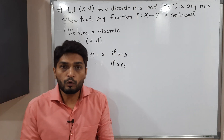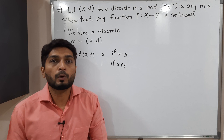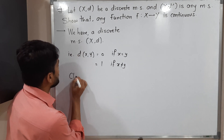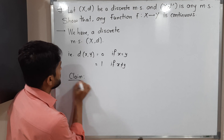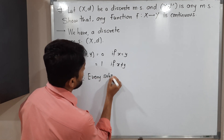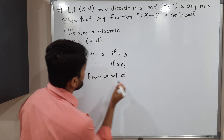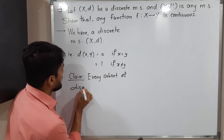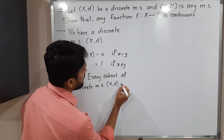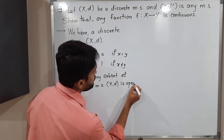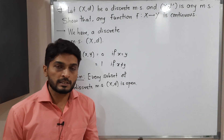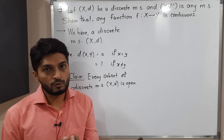Before proving this result we are going to prove a very important claim. The claim is: every subset of discrete metric space X,d is open. We are going to prove this one first. If you take any subset of discrete metric space, it is 100% open.